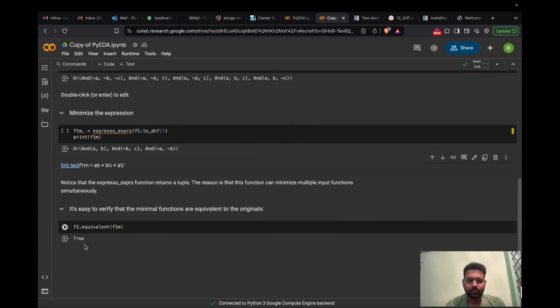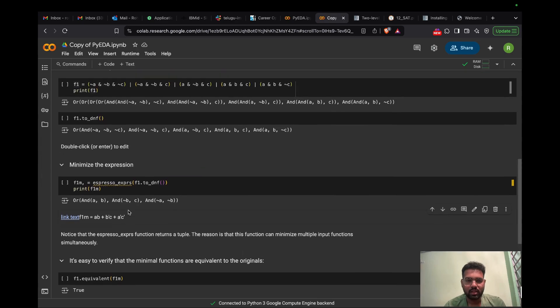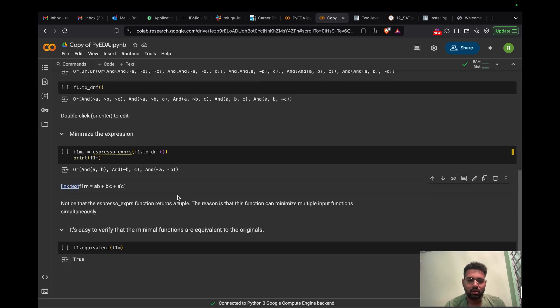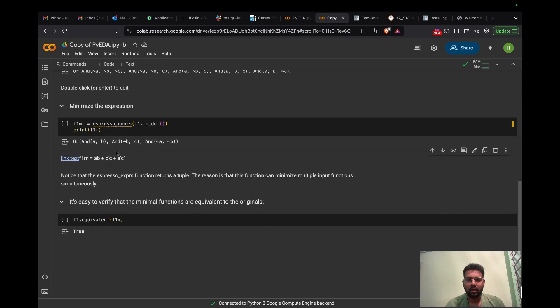After minimizing, we should verify that the minimized function is equivalent to the given function. To verify that function, we have another function: F1.equivalent, where we pass the minimized function F1M. If it is equivalent, it will return true, else it will return false. In this case, the minimized function is equivalent to the given function, so it returns true.